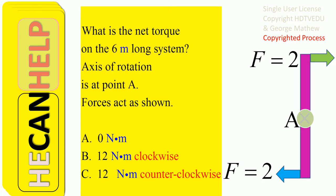We have two newtons acting at three meters, and that is going to produce a torque with respect to the axis of rotation. Imagine a nail going through this rod at point A. When you put that nail in, the application of this force is going to make the bar rotate in the clockwise direction. Similarly, the bottom force is also going to rotate it clockwise. Both torques act in the same direction, so they add.